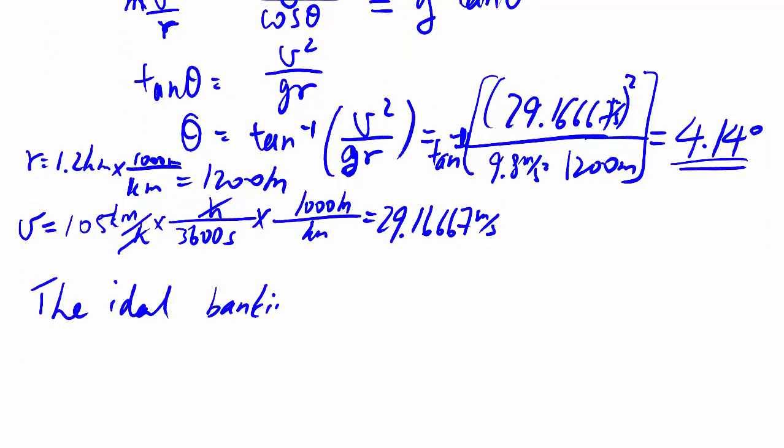So the ideal banking angle is 4.14 degrees. This is a quick way to demonstrate how to work with centripetal acceleration and uniform circular motion and forces, remembering our preference to line up our axes with our acceleration. Everything should be quite straightforward. For more advanced problems we can even put in friction and everything will work out exactly the same way.